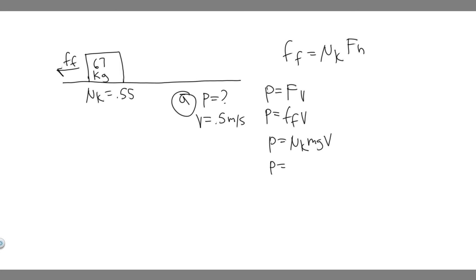So P is going to be equal to mu sub k, which is 0.55, times the mass, which is 67, times g — the acceleration due to gravity, which is 9.8 — and then multiply by the speed we're traveling, which is 0.5.